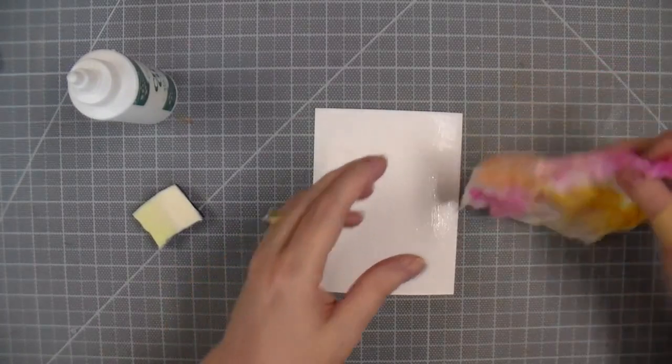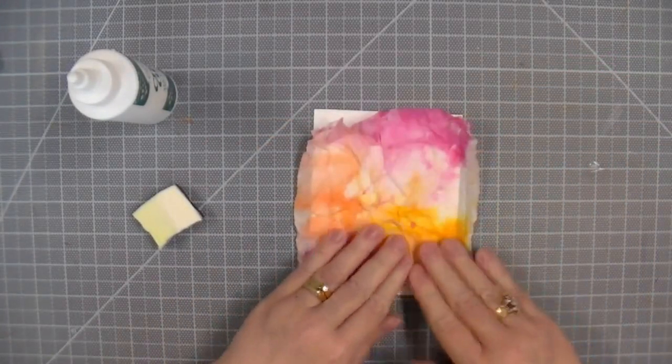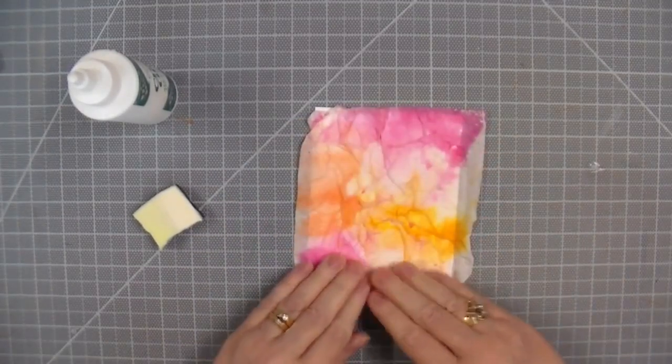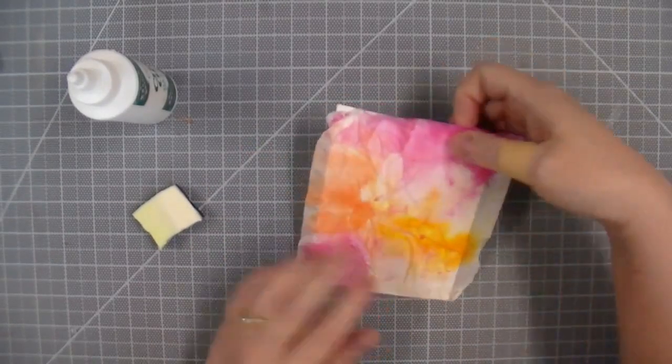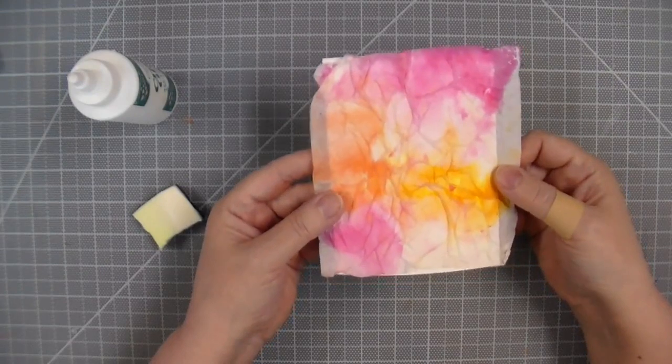Now as I place the tissue paper on top, I'm pressing in to create even more creases and texture onto the background as I glue it down. This creates a beautiful watercolored and textured background that you can use for your cards or for die cutting.